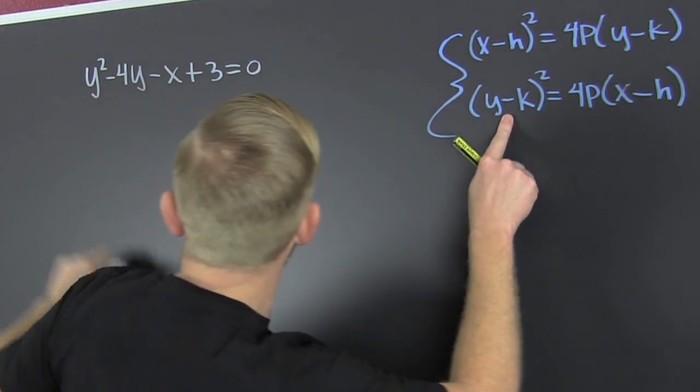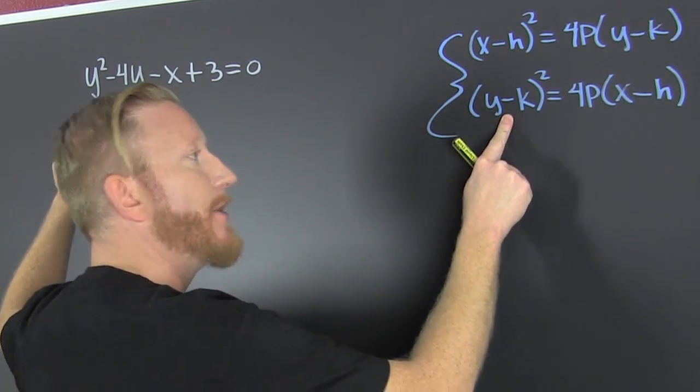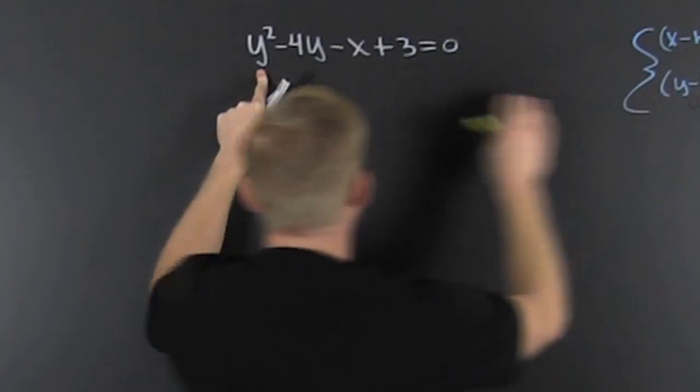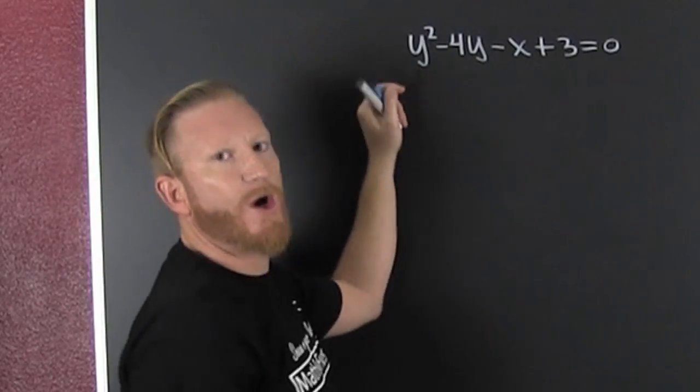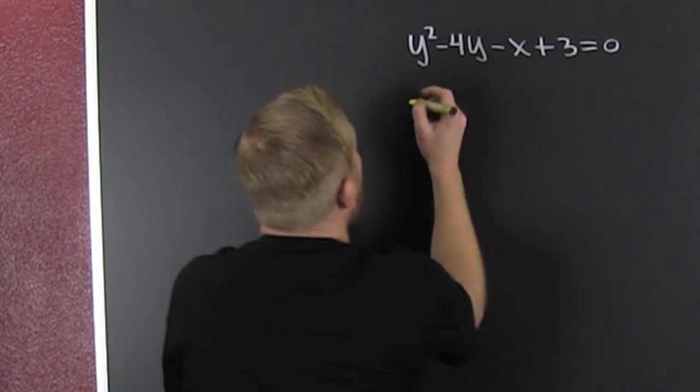I see that the y is squared, so it must be this one. Now, to put it into preferred form, I'm going to get everything that's not y over to the other side.